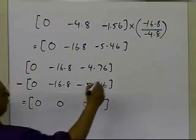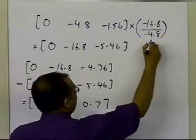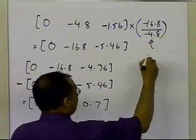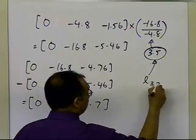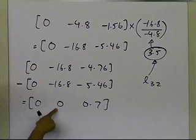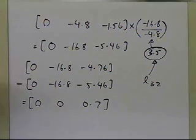So this minus 16.8 divided by minus 4.8 is nothing but 3.5, so this number 3.5 will be actually my third row, second column, because it made this third row, second column to be 0. That's why that corresponds to L32.